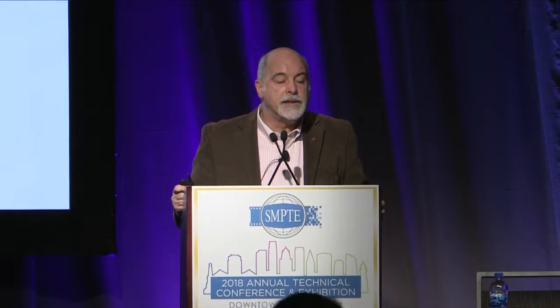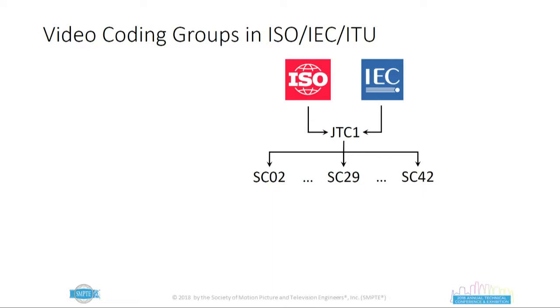Underneath JTC-1 there are a number of subcommittees, ranging from SC-02 up through SC-29, which is the one relevant to us — multimedia applications — and up to SC-42, one of the newer subcommittees, which covers blockchain. From there, there are two working groups: Working Group 1, which we know as JPEG, covering still image, and Working Group 11, which we know as MPEG, covering moving images, audio, and transport.